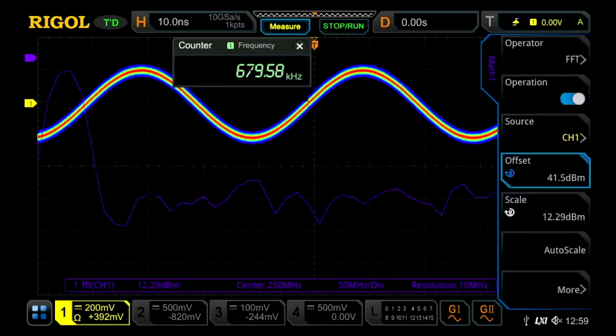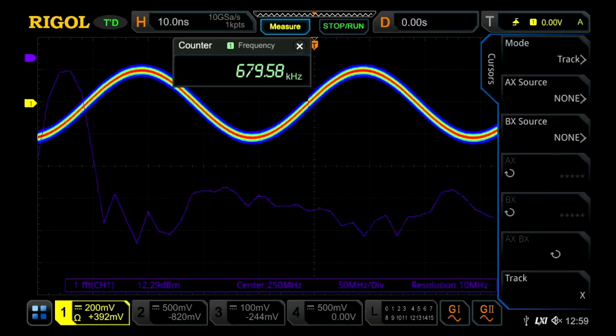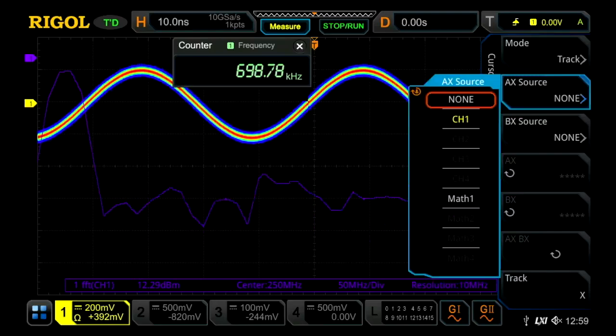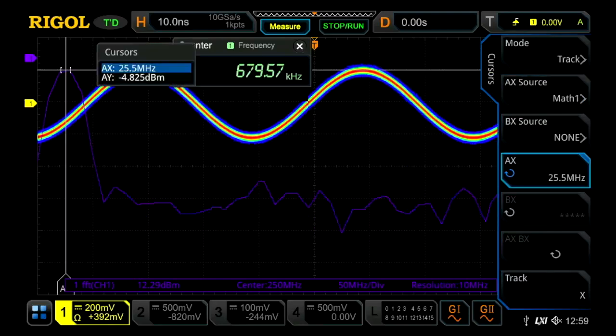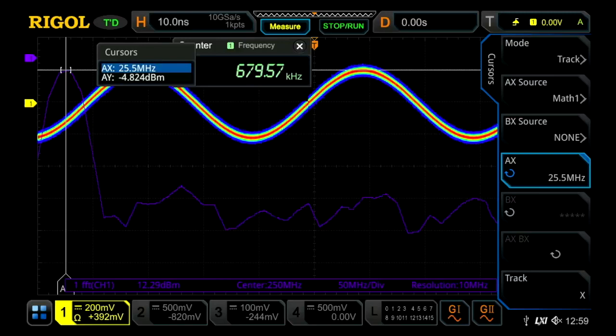So turn on a couple different things here. Now turn on the FFT, we've got the color grade on. Let's turn on a cursor on that FFT as well so we can see the peak cursor at the 25 megahertz of that sine wave.